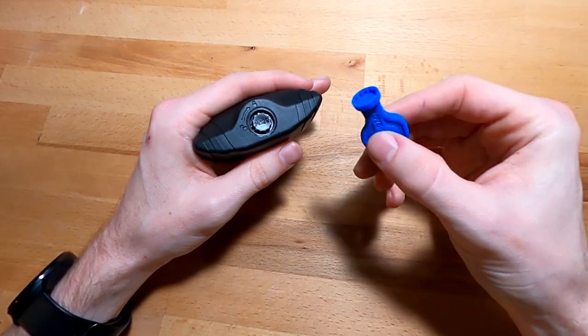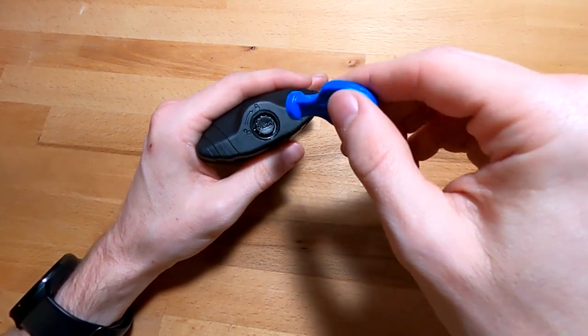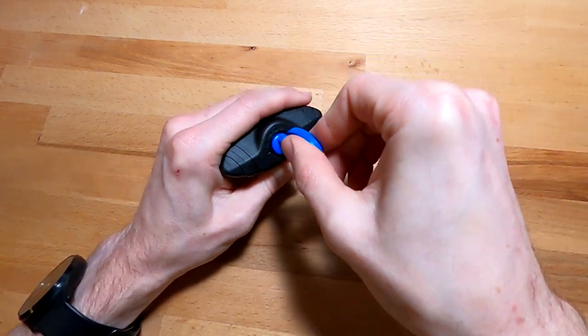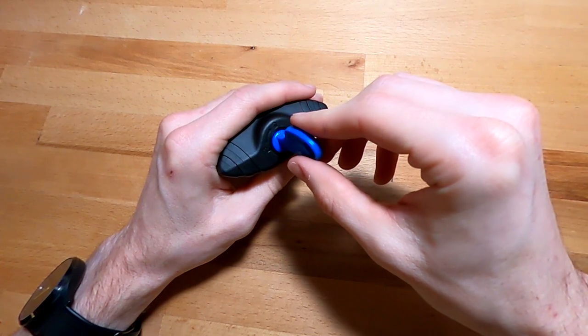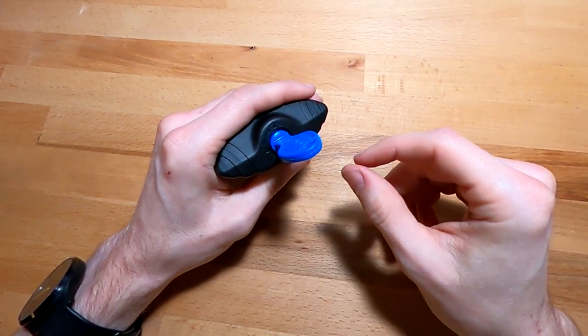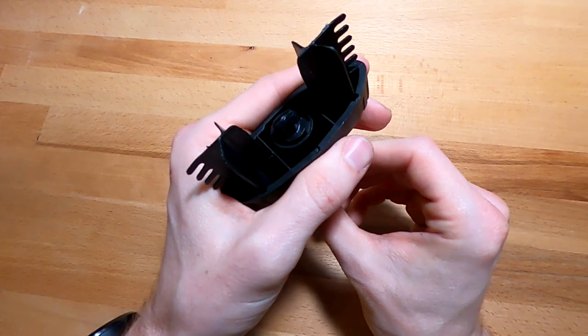You simply insert the disc shaped key into the keyway, and with a counter clockwise rotation, you can see that we have it open. I'll show you again from the other side.